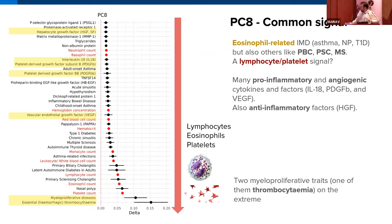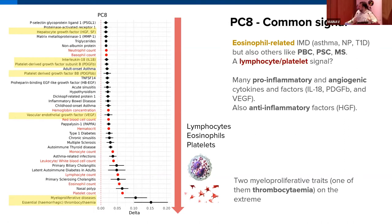PC8 appears to capture a common signal of eosinophils, platelets, and lymphocytes. For this component we see eosinophil-related IMDs such as asthma, nasal polyps, and Type 1 Diabetes, plus primary cholangitis, primary sclerosing cholangitis, and multiple sclerosis. We also see pro-inflammatory and angiogenic cytokines, anti-inflammatory factors, and at the very extreme of the platelet/eosinophil/lymphocyte side, two myeloproliferative traits including thrombocythemia — which makes intuitive sense given its association with elevated platelet levels.